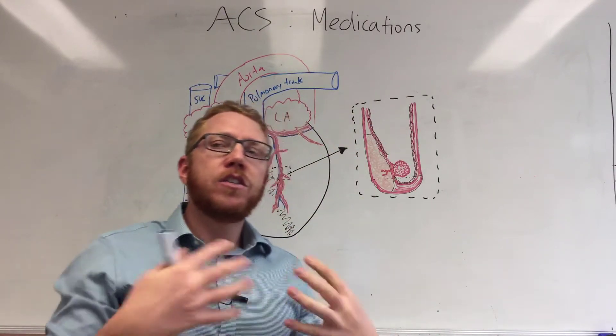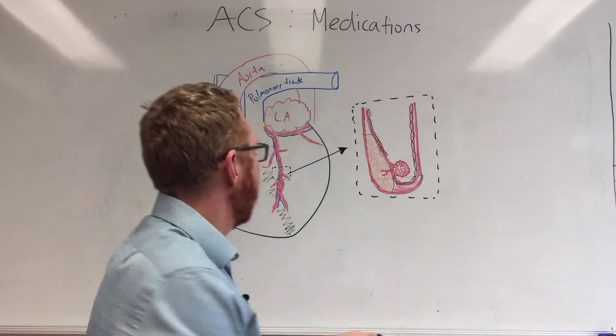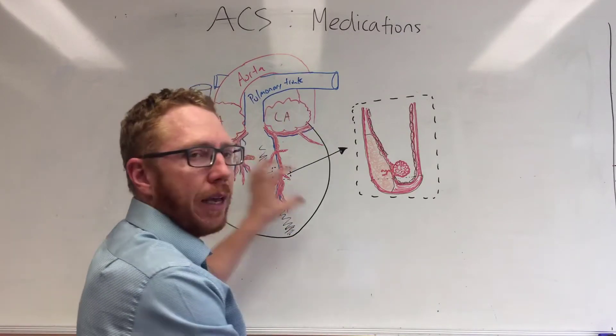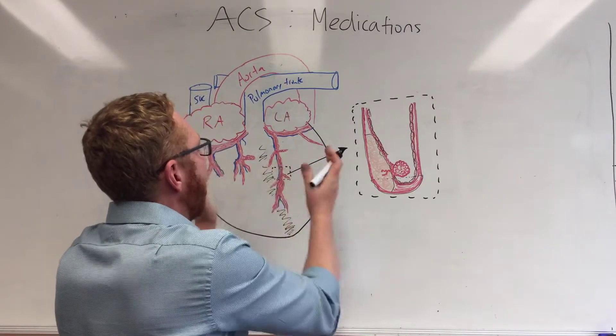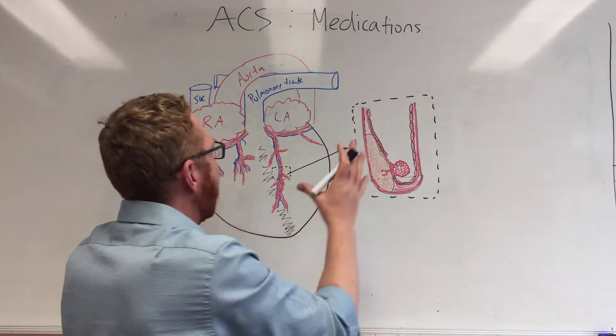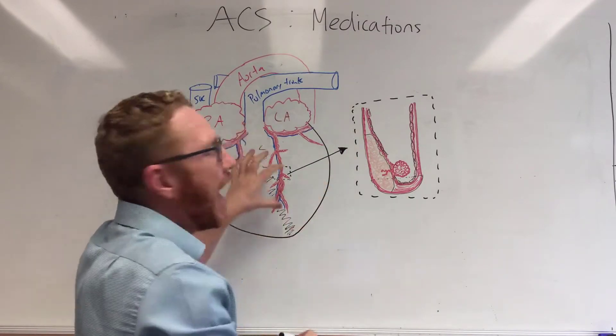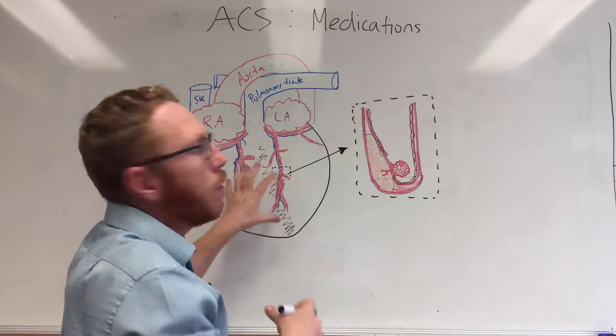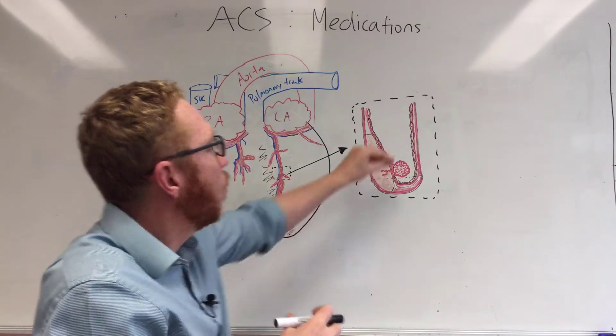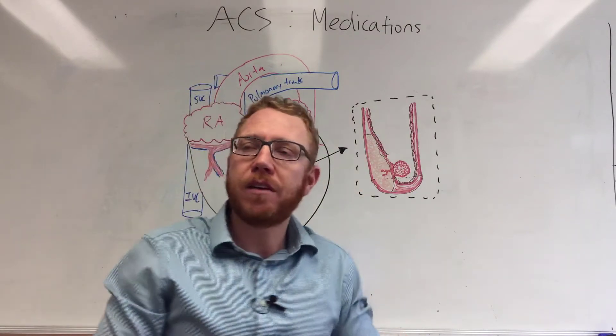When we look at beta blockers, so beta-1 antagonists, they will stop essentially the speed of the heart. So slow the heart down, probably make the heart contract more efficiently. And then by doing that, the heart itself needs less oxygen. So that is probably going to be protective when we are in an ischemic event.